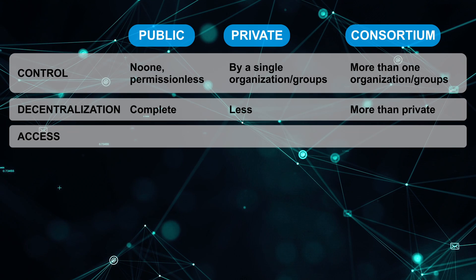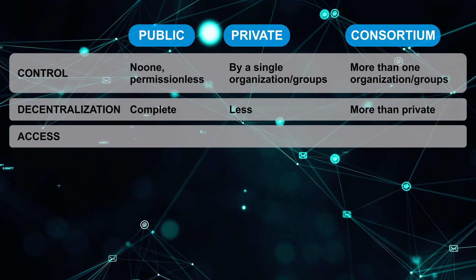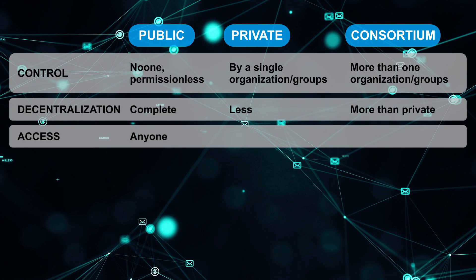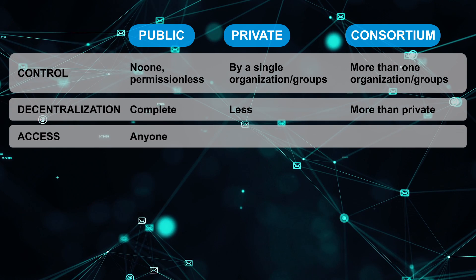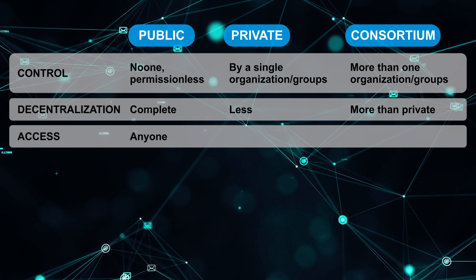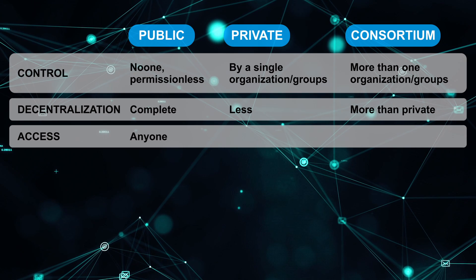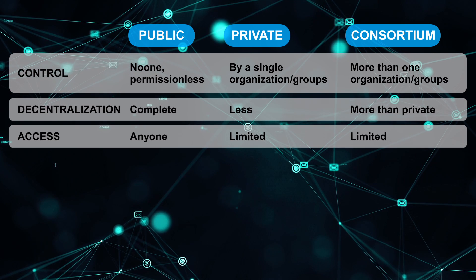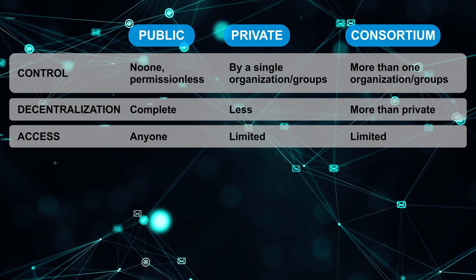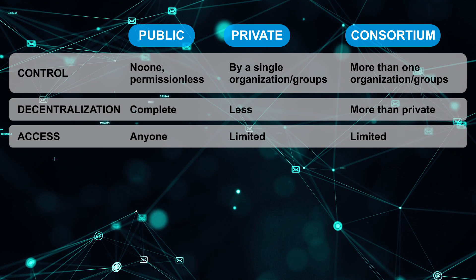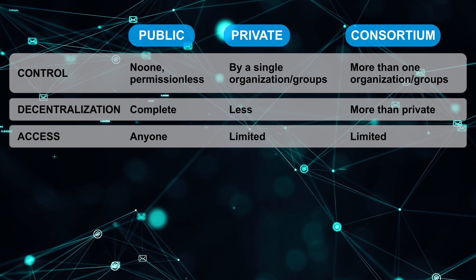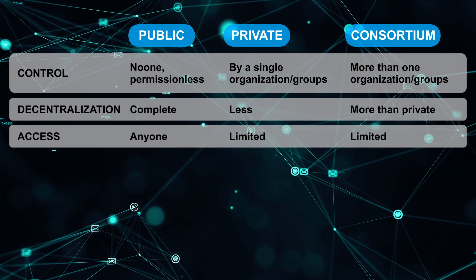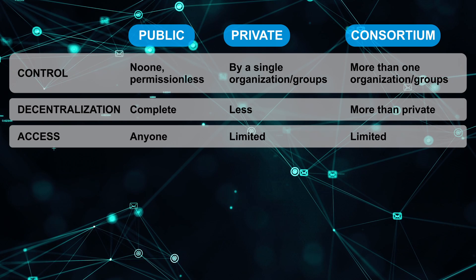Moving to the next point, we have access. In public blockchain, anyone can access it — everyone is eligible to join the network and become a part of it. But in private and consortium blockchain, only selected participants can participate in the network, so there is some kind of trust involved.